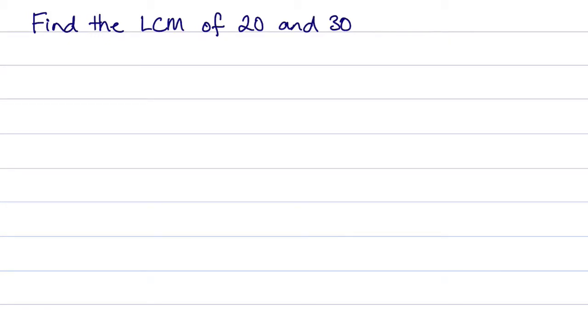In this question, we're asked to find the lowest common multiple of 20 and 30. Probably the easiest way to tackle this question is just to list the multiples of 20 and 30.